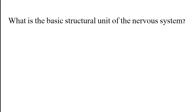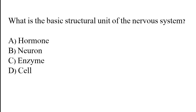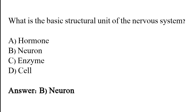What is the basic structural unit of the nervous system? Options: Hormone, Neuron, Enzyme, Cell. The correct answer is option B. Neuron is the basic structural unit of the nervous system.